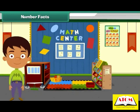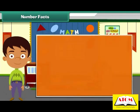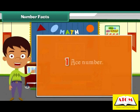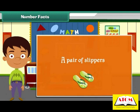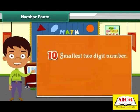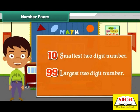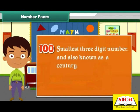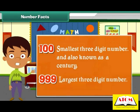Number facts. Each number has an interesting fact associated with it. Let us know more about them. Number 1 is known as the ace number. A pair is a group of 2 objects. 10 is the smallest 2-digit number. 99 is the largest 2-digit number. 100 is also known as a century. 100 is the smallest 3-digit number. 999 is the largest 3-digit number.